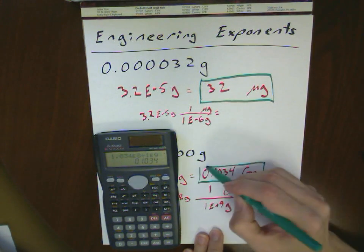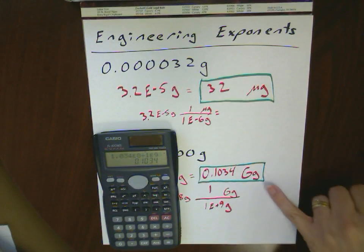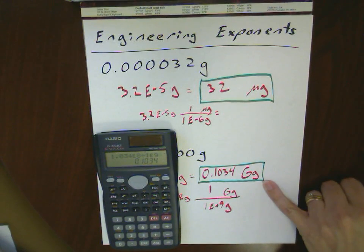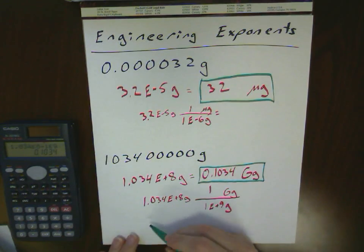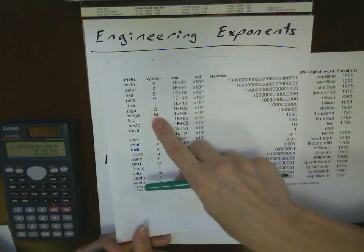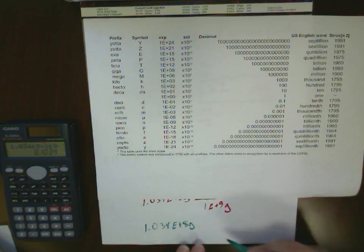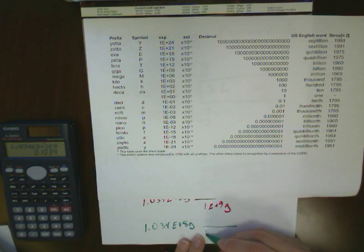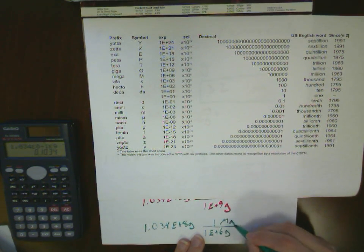Now, where you'd actually use a gigagram, I don't know, but we're working with the engineering exponents. Notice this gives you a number that's slightly smaller than 1. The other way we could have done this one is we could have looked at this and said, what if I have 1.034e to the plus 8 grams, and I wanted to express it in terms of megagrams. Sometimes they use the one which is just one below it. And so I would have 1e to the plus 6 grams is 1 megagram.